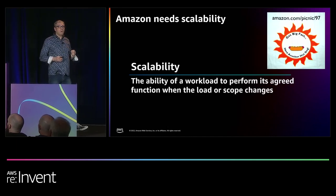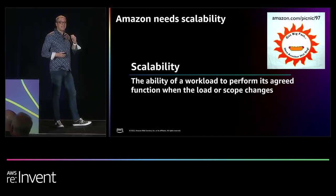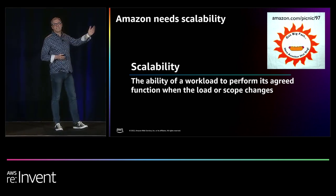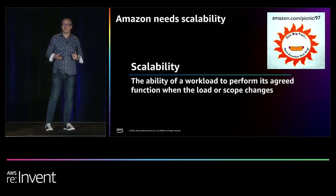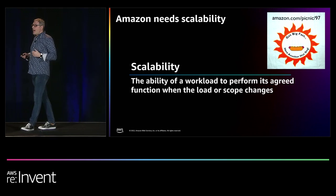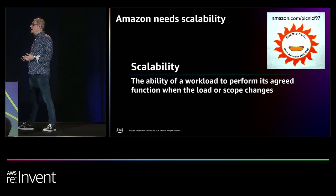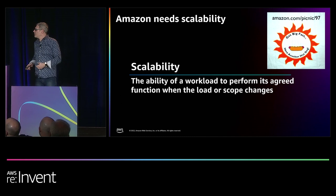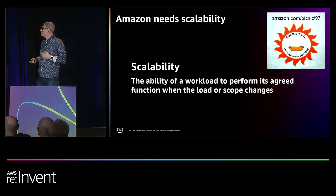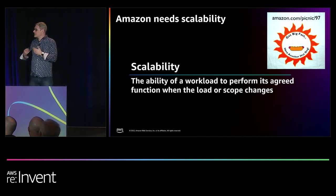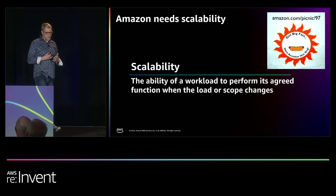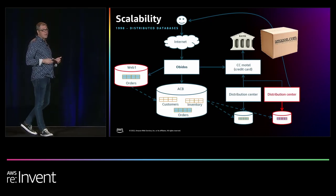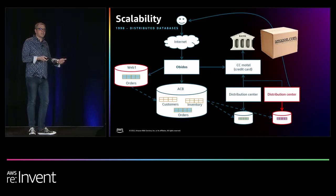The motto of Amazon, especially back in those days, is Get Big Fast. There's actually a T-shirt from one of the picnics about Get Big Fast. And to get big fast, you're going to need scalability. Scalability is the ability of a workload to perform its agreed function as the load or scope changes. So to get there, they had to evolve the architecture.